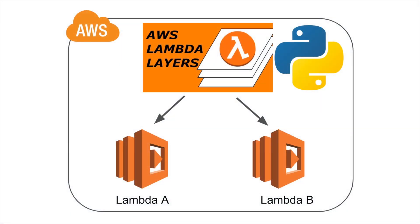Welcome back to another episode of AWS tutorial. Today I'm going to talk about Lambda Layers and how to use them in Lambda functions. In today's tutorial I'm going to use Python for the demo, but it works the same for all other languages as well. I'm going to show you a step-by-step instruction on how to create a deployment package using the virtual environment, how to upload that into Lambda Layers, and then create a Lambda function to use them.